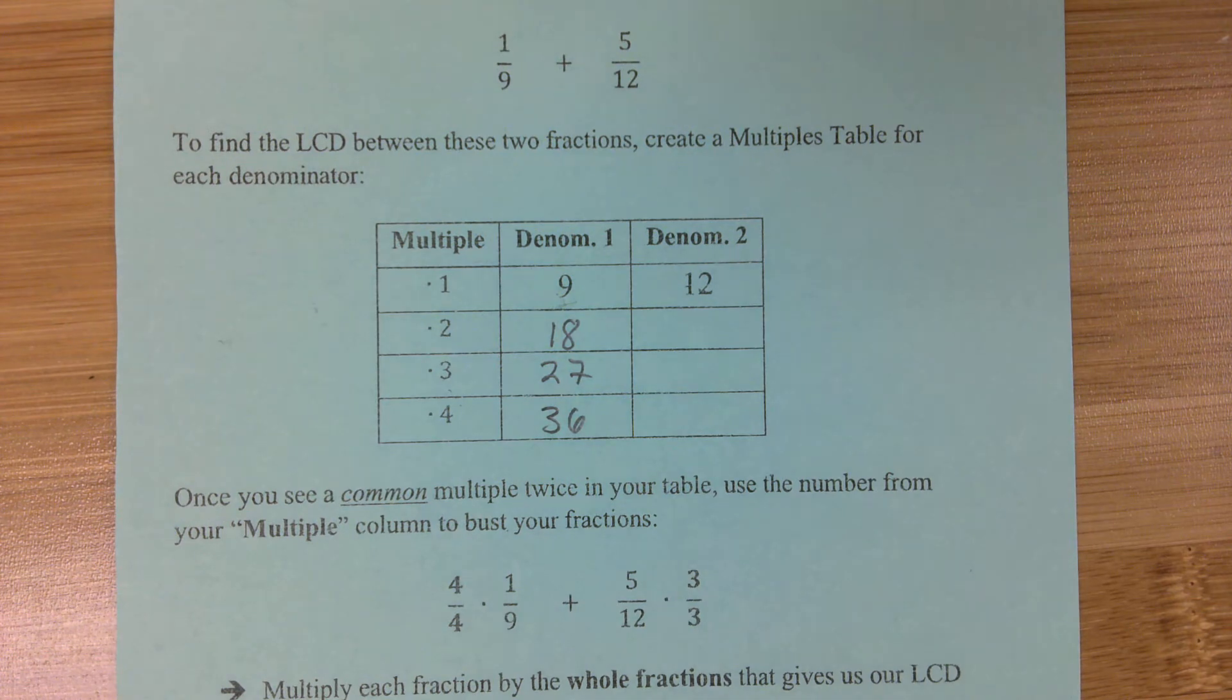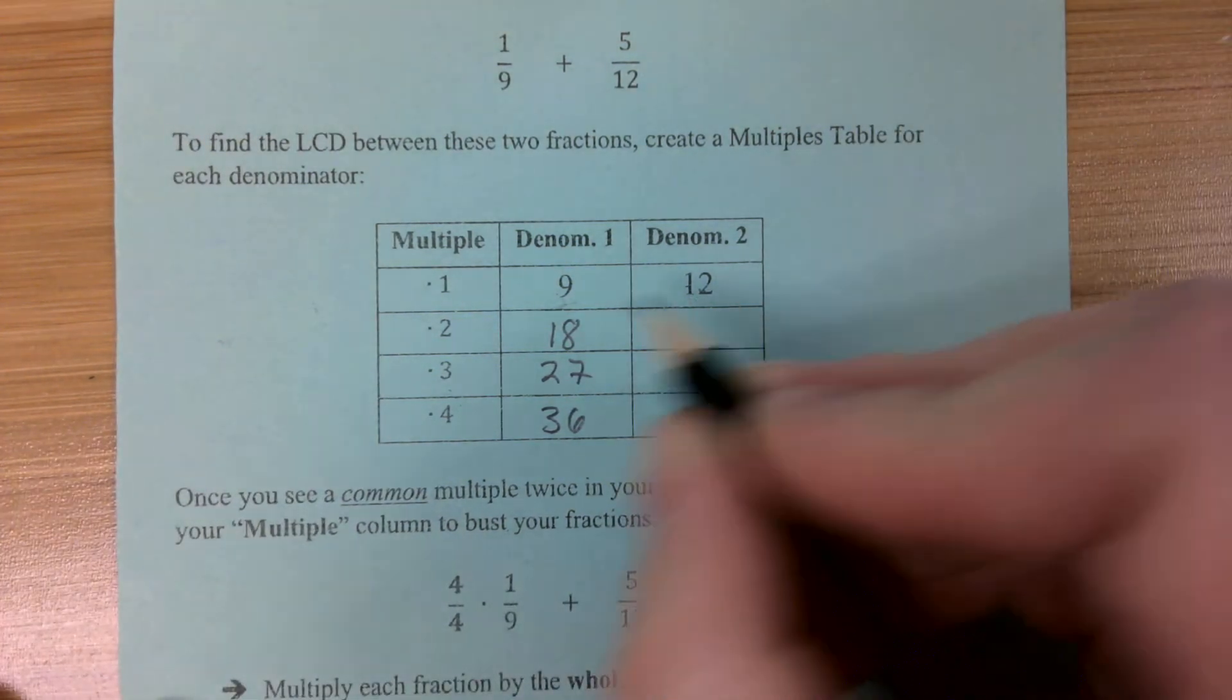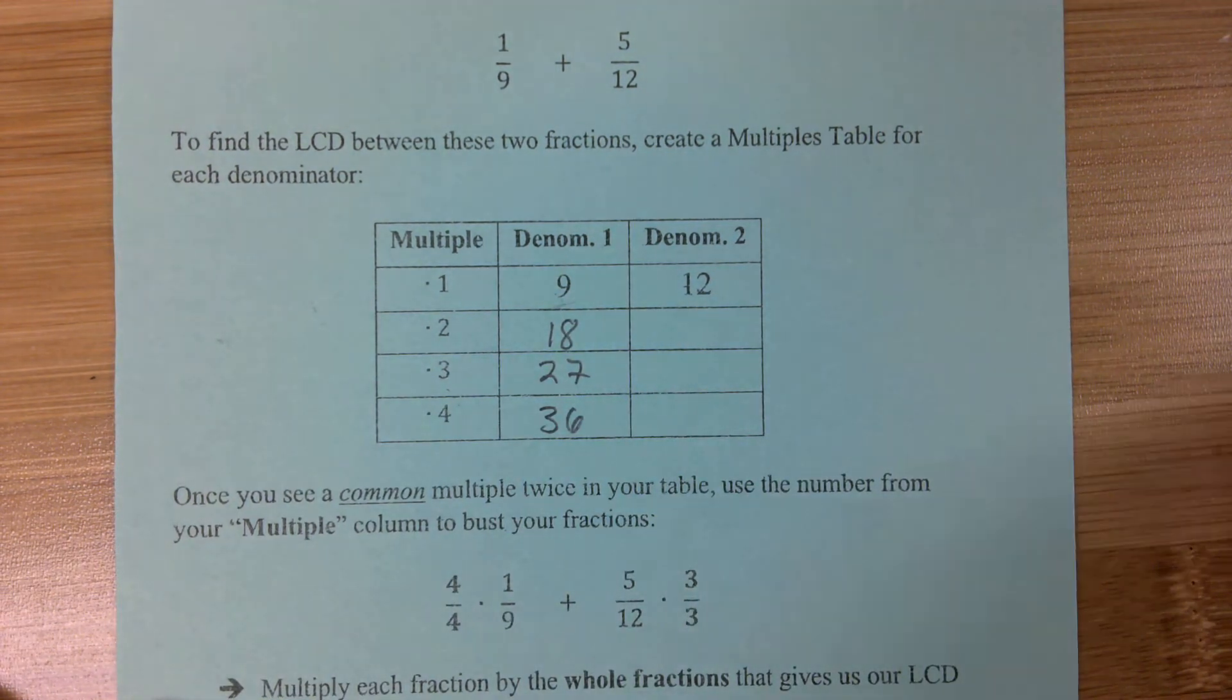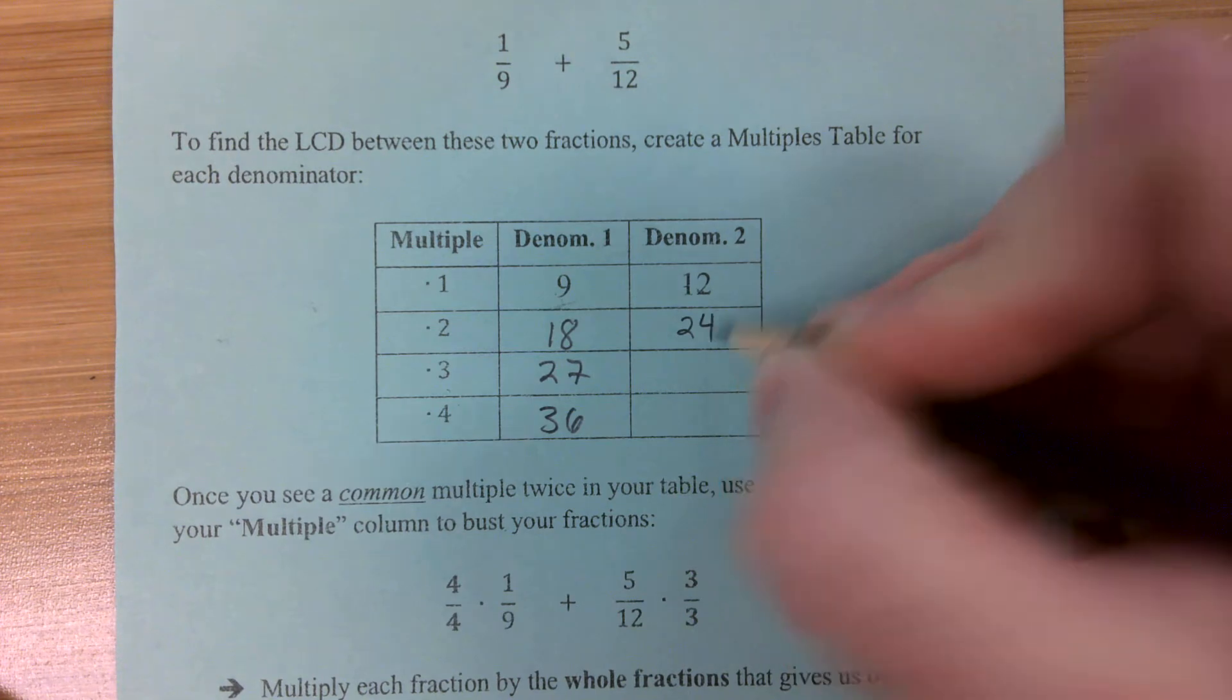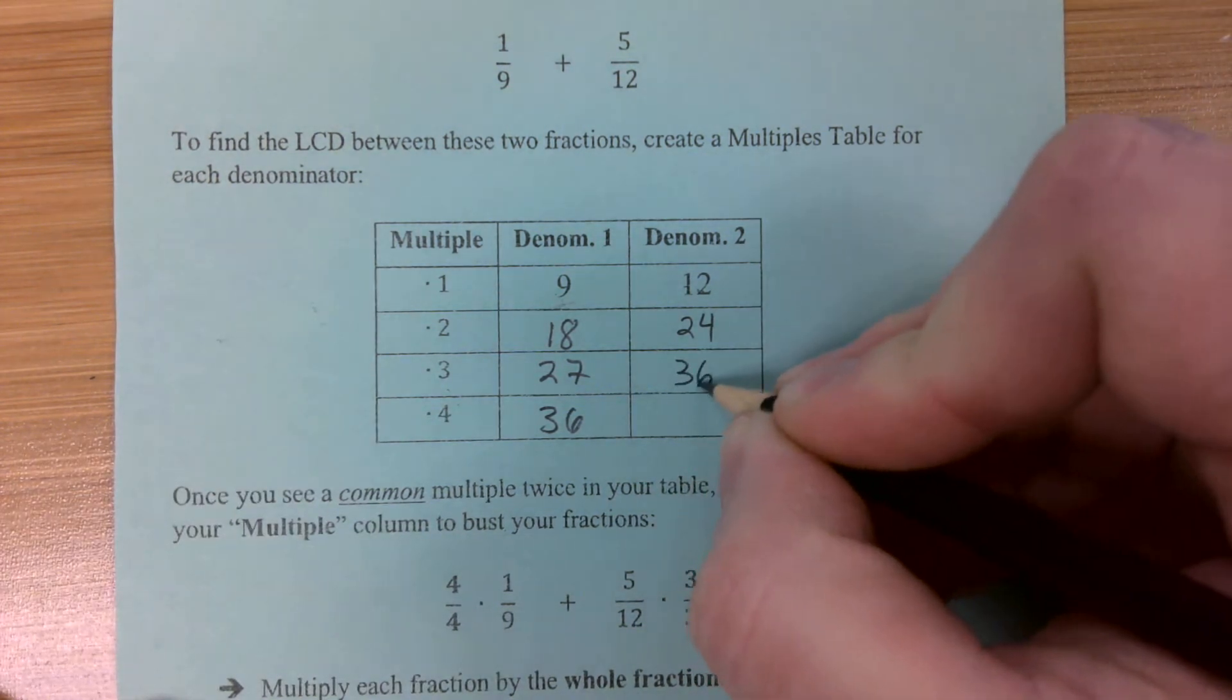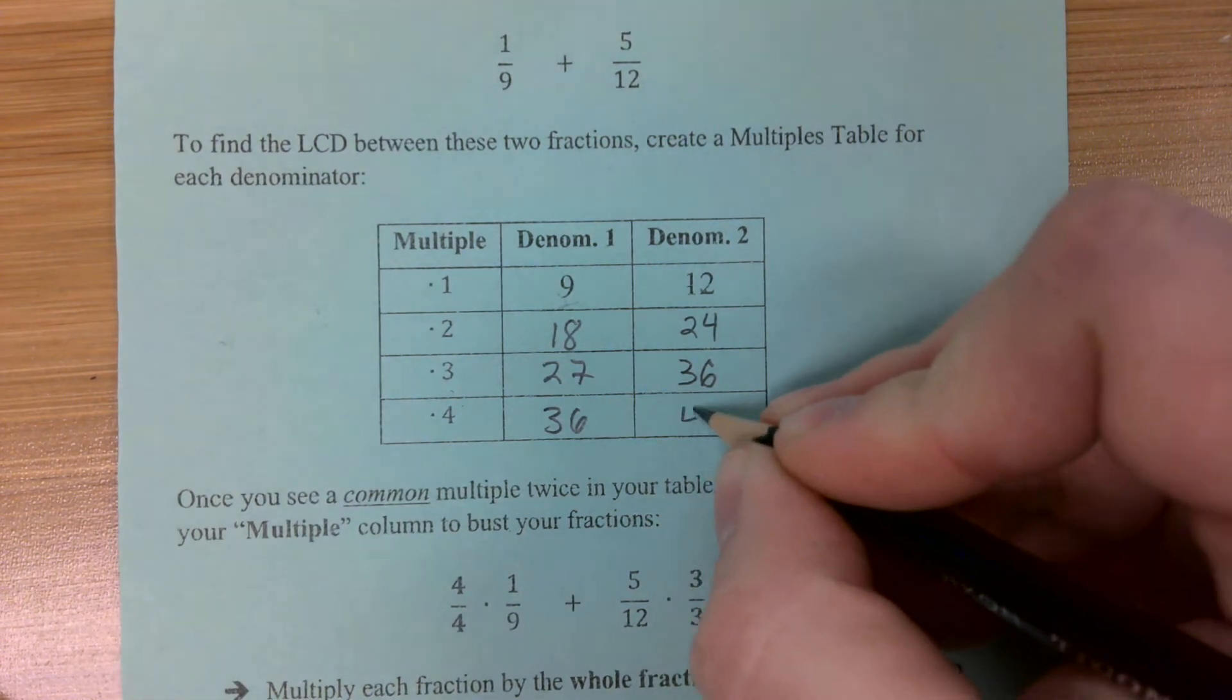Now, we're going to go to our second denominator and list out all of our multiples, or at least the first 4 multiples, for 12. 12 times 1 is 12, but what's 12 times 2? 12 times 2 is 24. What's 12 times 3? 36. Uh-oh, there we go. And what about, let's just finish it off, 12 times 4? 48, right?